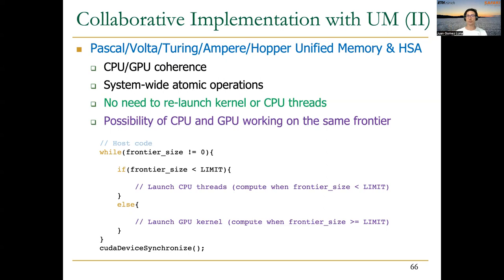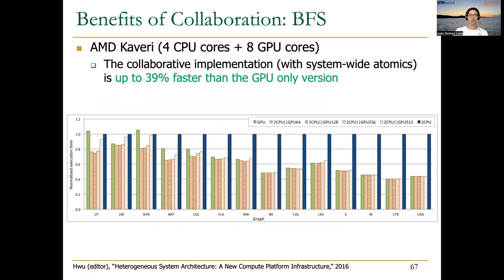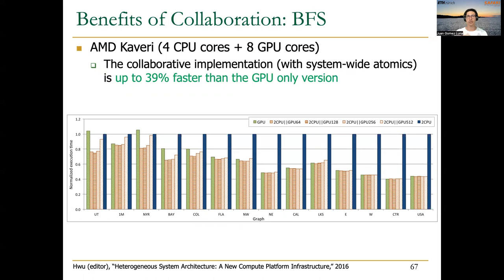It's even possible to have both CPU threads and GPU threads working on the same frontier simultaneously. Using this approach, we observed speedups up to 39% faster than the GPU-only version for certain graphs. For very large graphs with very large frontiers, the GPU-only approach dominates, but for graphs with more balanced frontier sizes, the collaborative approach is definitely beneficial.